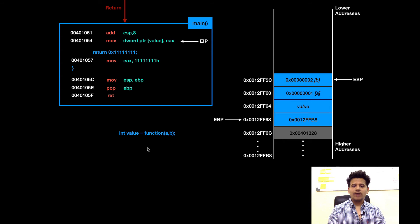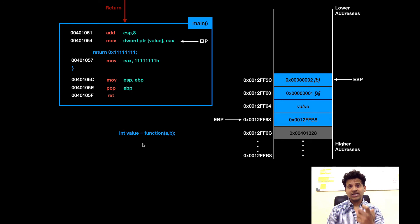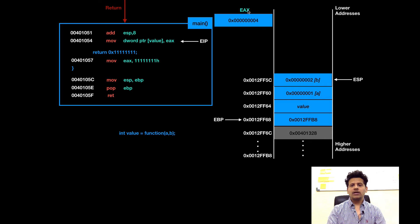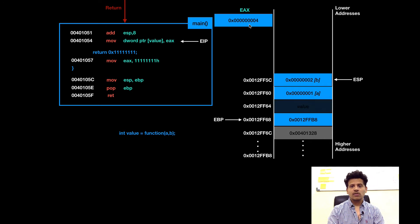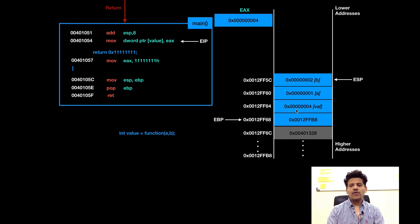Let's execute ADD ESP, 8. Those two elements are cleared from the stack. The next instruction is move EAX into the address pointed by pointer value. Let's recall — when main called the function, it passed two arguments a and b. Now main is saving the result into the integer value returned by the function. As we know, the EAX register contains the return value. So we will save that into the address pointed by pointer value. EAX contains 4, which is the return value from the function. It got moved into the address pointed by value.